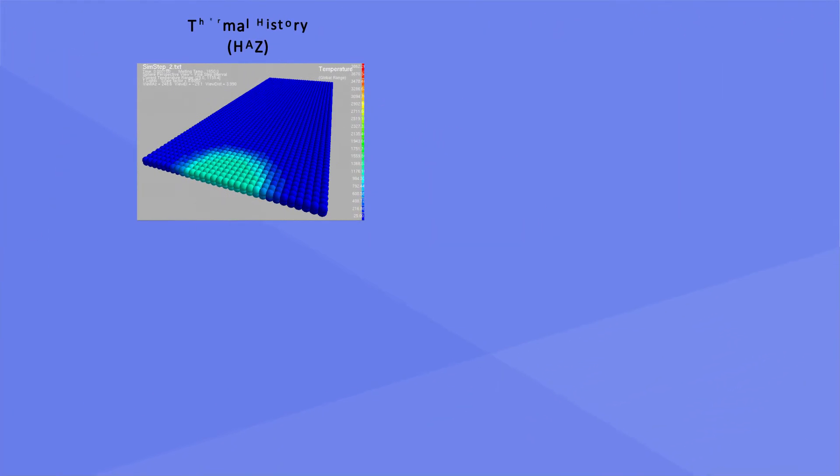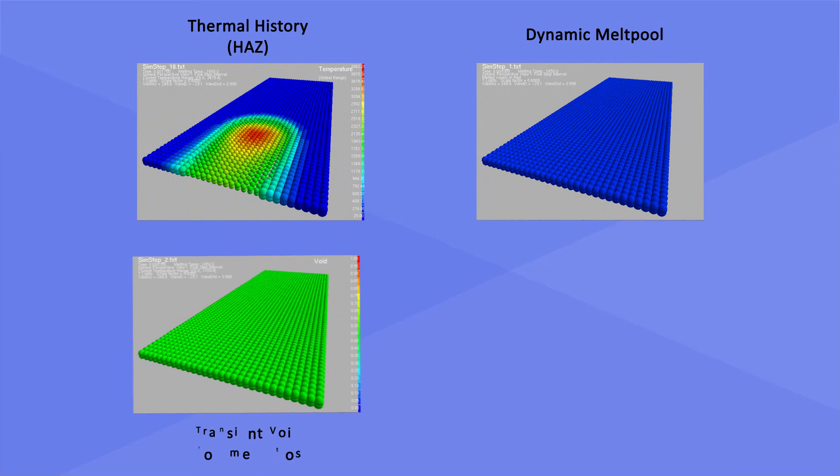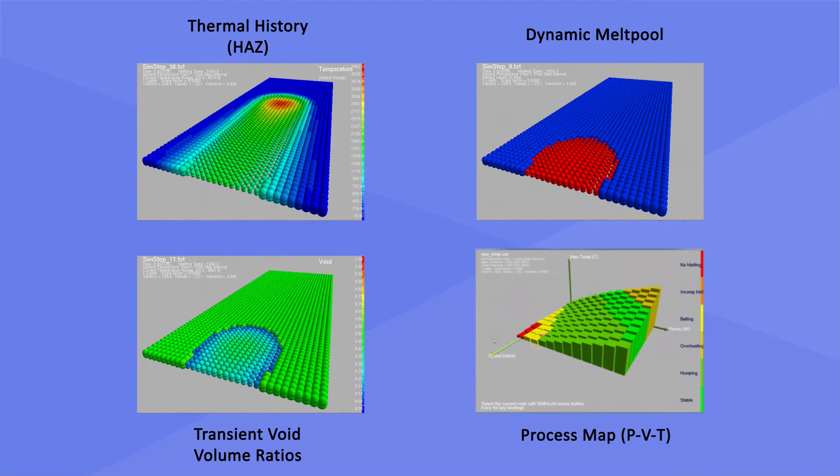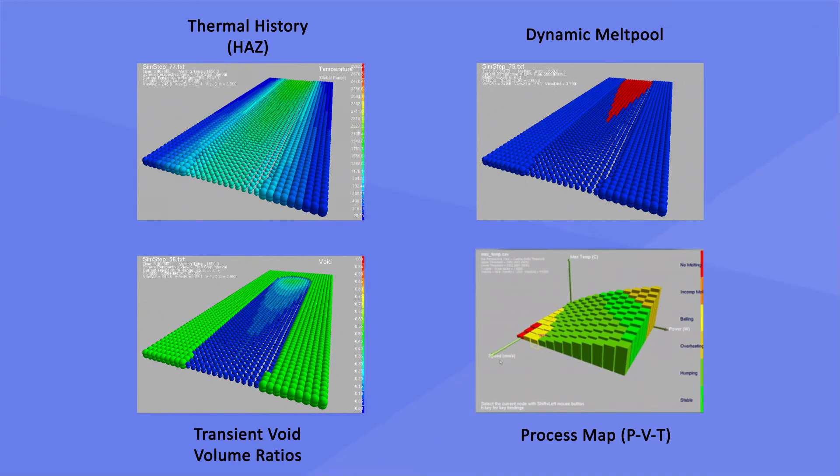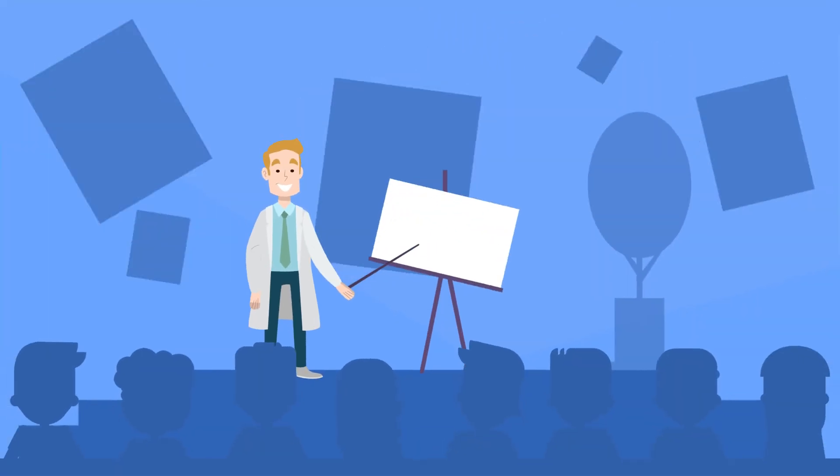TMG, or thermal management, quickly and accurately predicts thermal history, material states, dynamic evolution of melt pool and heat affected zones, all while identifying stable and unstable zones during the print process.